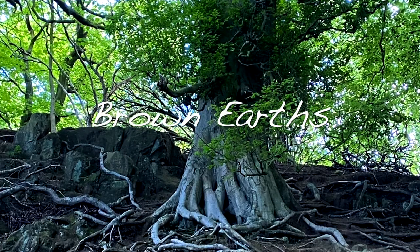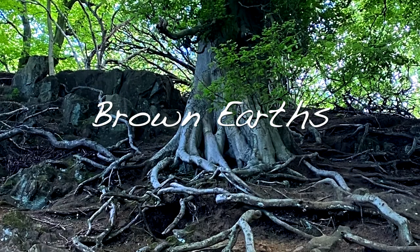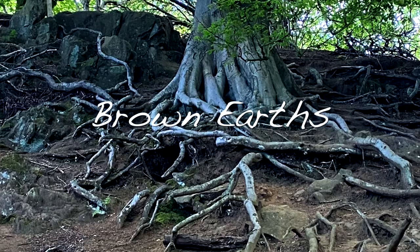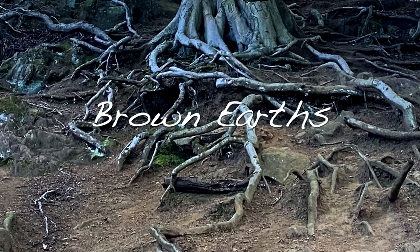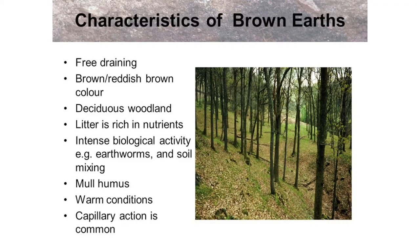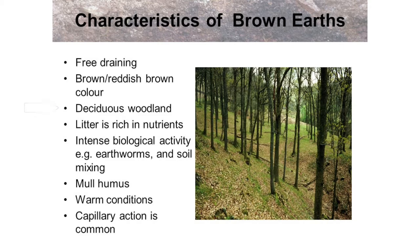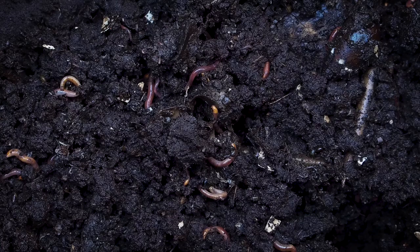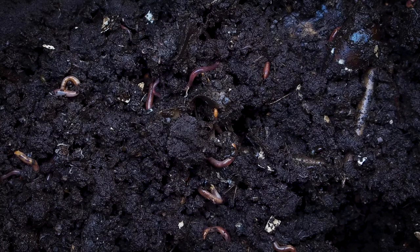Brown earths, sometimes referred to as brown soils or brown forest soils, have a number of characteristics that will help you to identify them. Brown earths are free draining, they are brown or reddish brown in colour and they're often found in areas of deciduous woodland. The litter is rich in nutrients and there's often intense biological activity, for example through earthworm movement.